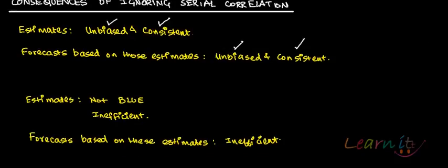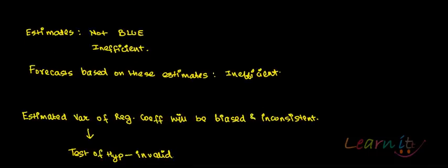But the problem is that these OLS estimates will not have minimum variance. They will not be efficient, they will be inefficient. And because they are inefficient, they are no longer BLUE.